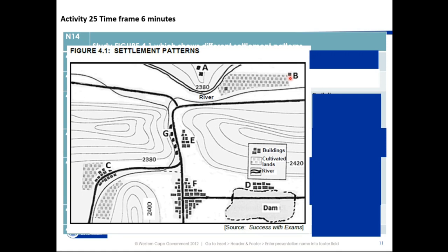Going to B: B is only a single settlement, a house or a farm. Whereas in C, they are all grouped together. That is a type of pattern and that is a type of pattern.